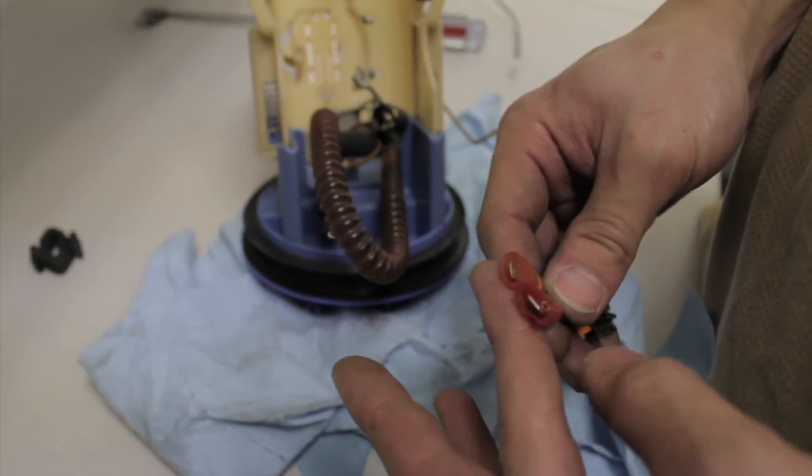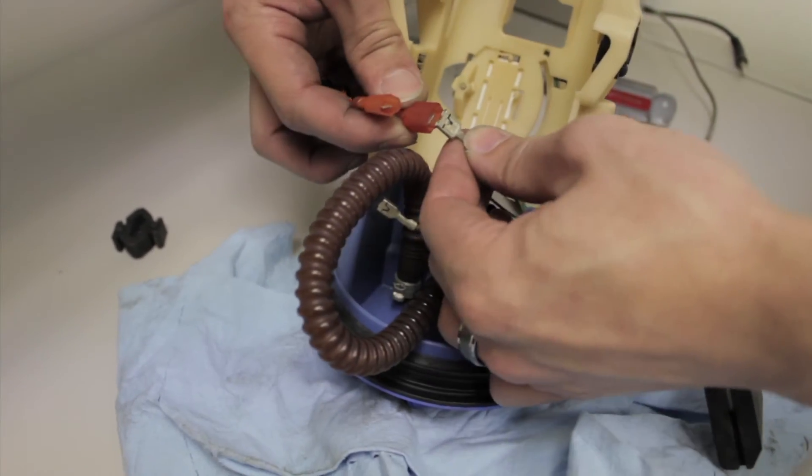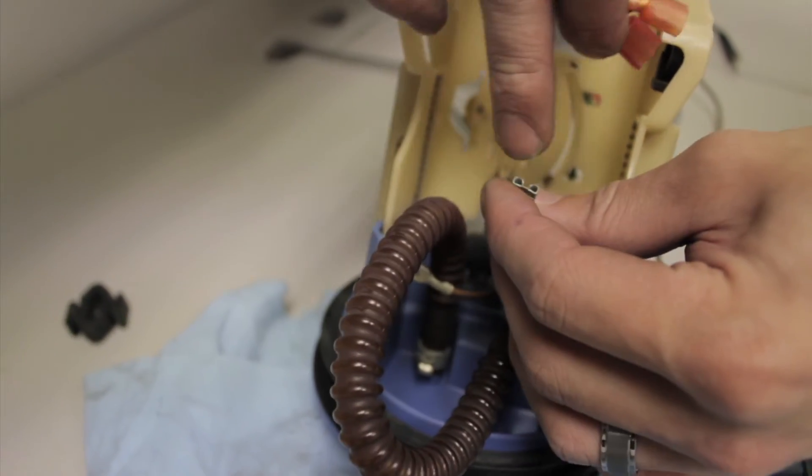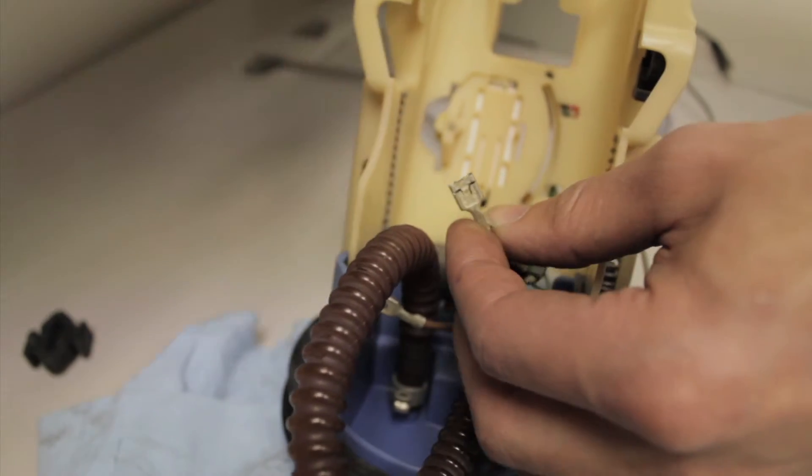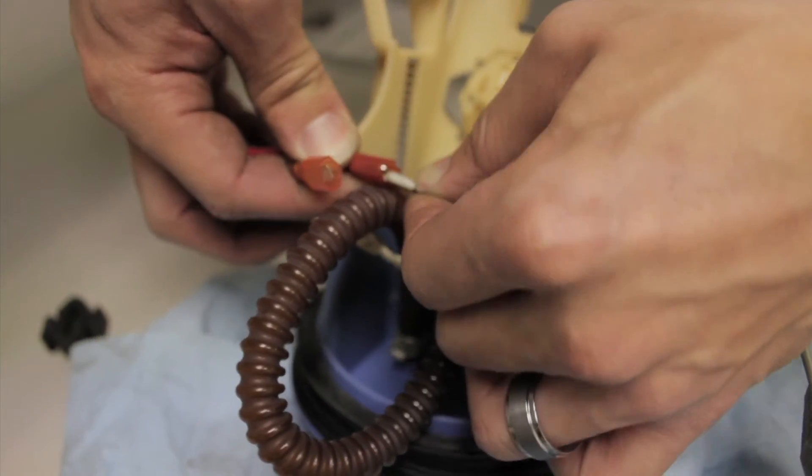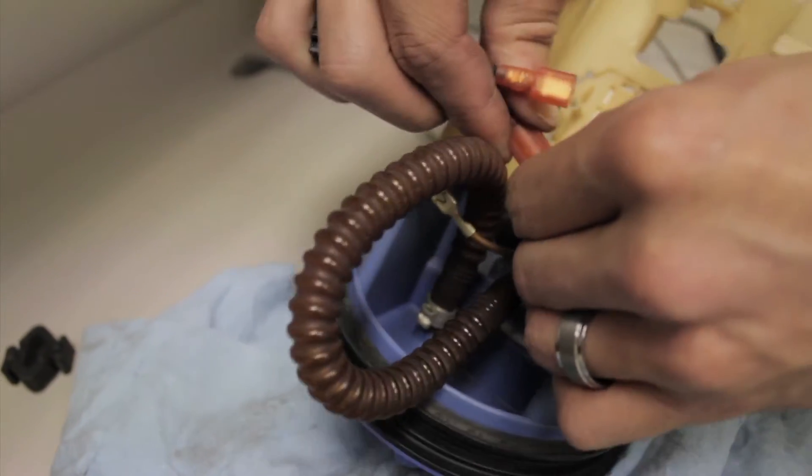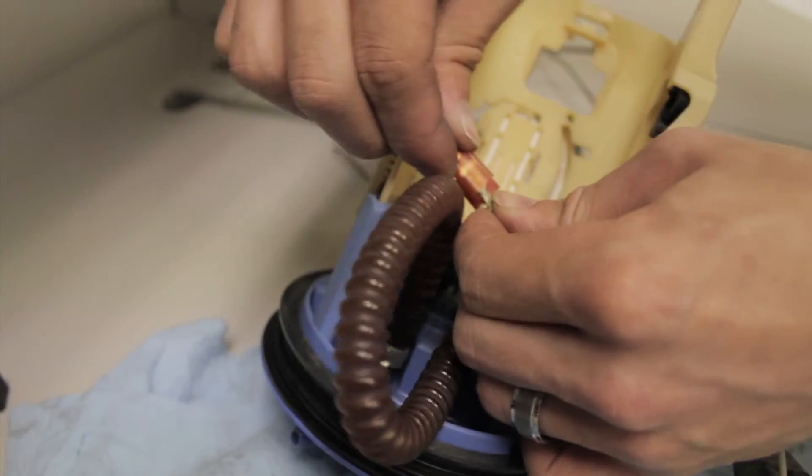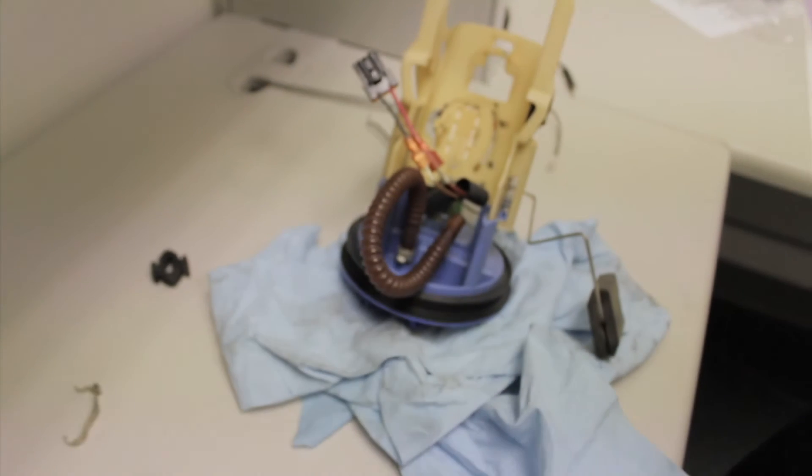So the big terminal to the big plug. Make sure that the blade sits inside that connector. A lot of the times people will push these together and not pay attention and it will be jammed up against one side of it. So be sure that the blade inserts into the connector firmly. Same thing with the smaller.